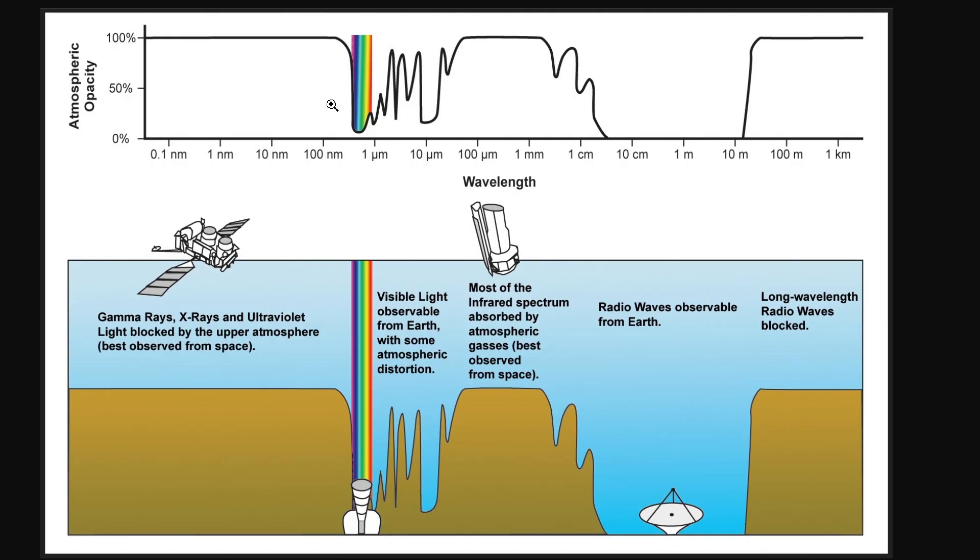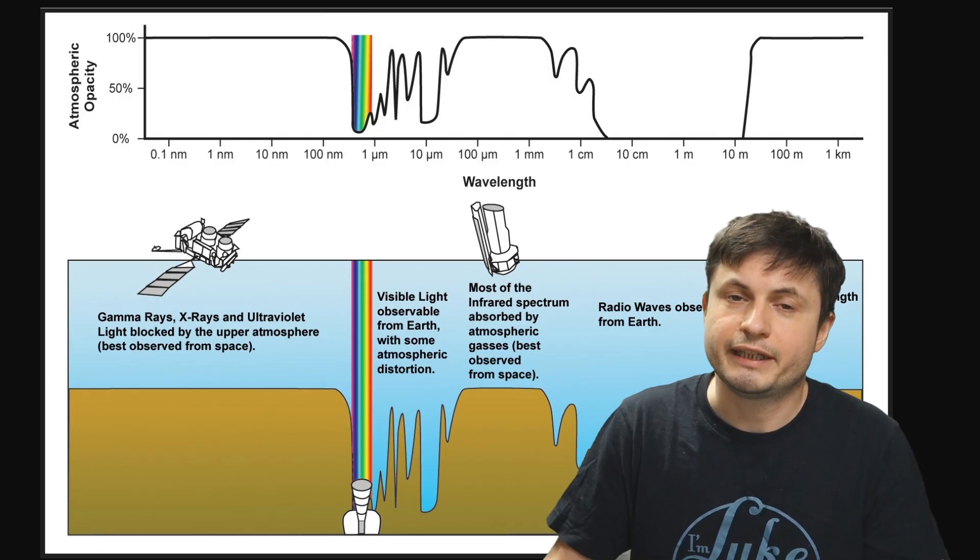And so here as you can see certain frequencies of light visual light do go through to some extent. But the infrared spectrum the higher energy light such as gamma rays and x-rays and some of the extremely long wavelengths of radio light are not able to penetrate our atmosphere and essentially get absorbed.